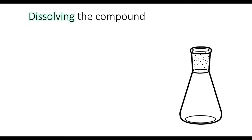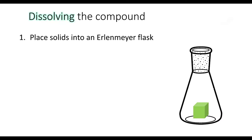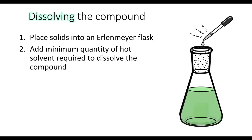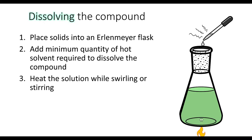Now let's go through the steps of dissolving the compound. First, we place the solids into an Erlenmeyer flask. An Erlenmeyer flask is preferred because it has a more narrow neck, so if the flask tips over, most of your liquid is going to stay inside. Then we add the minimum quantity of hot solvent required to dissolve the compound and heat the solution while swirling or stirring.